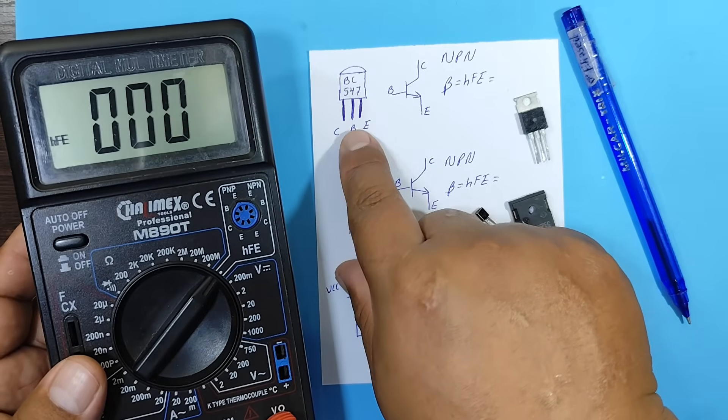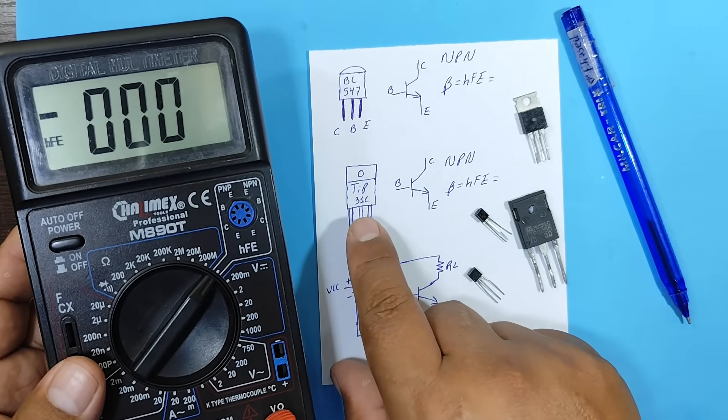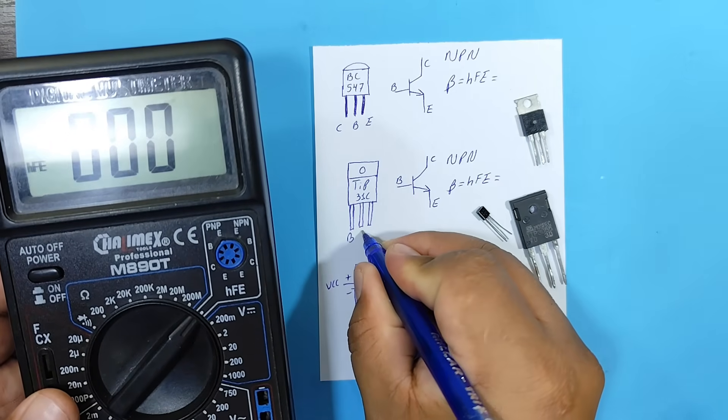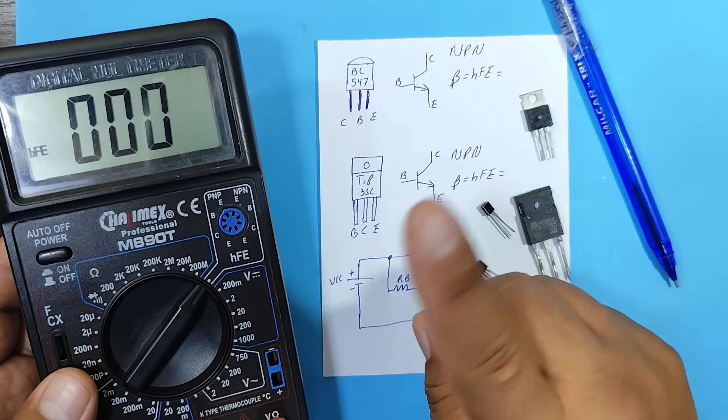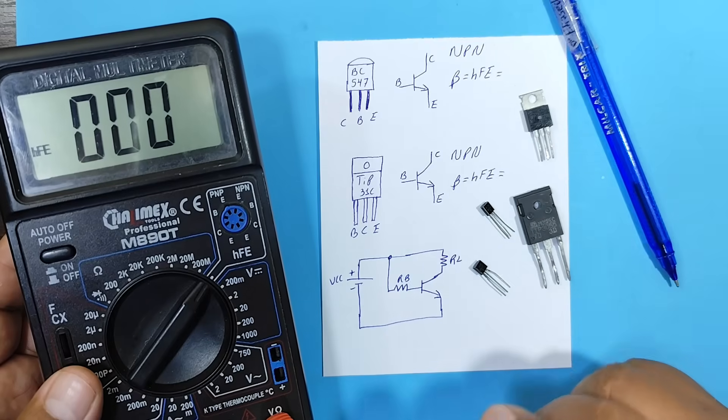In the case of BC547, that would be the distribution. In the case of the tip 31C, it would be base, collector, and emitter. The pinout isn't always the same. Therefore, you need to know the pin order of your transistor.